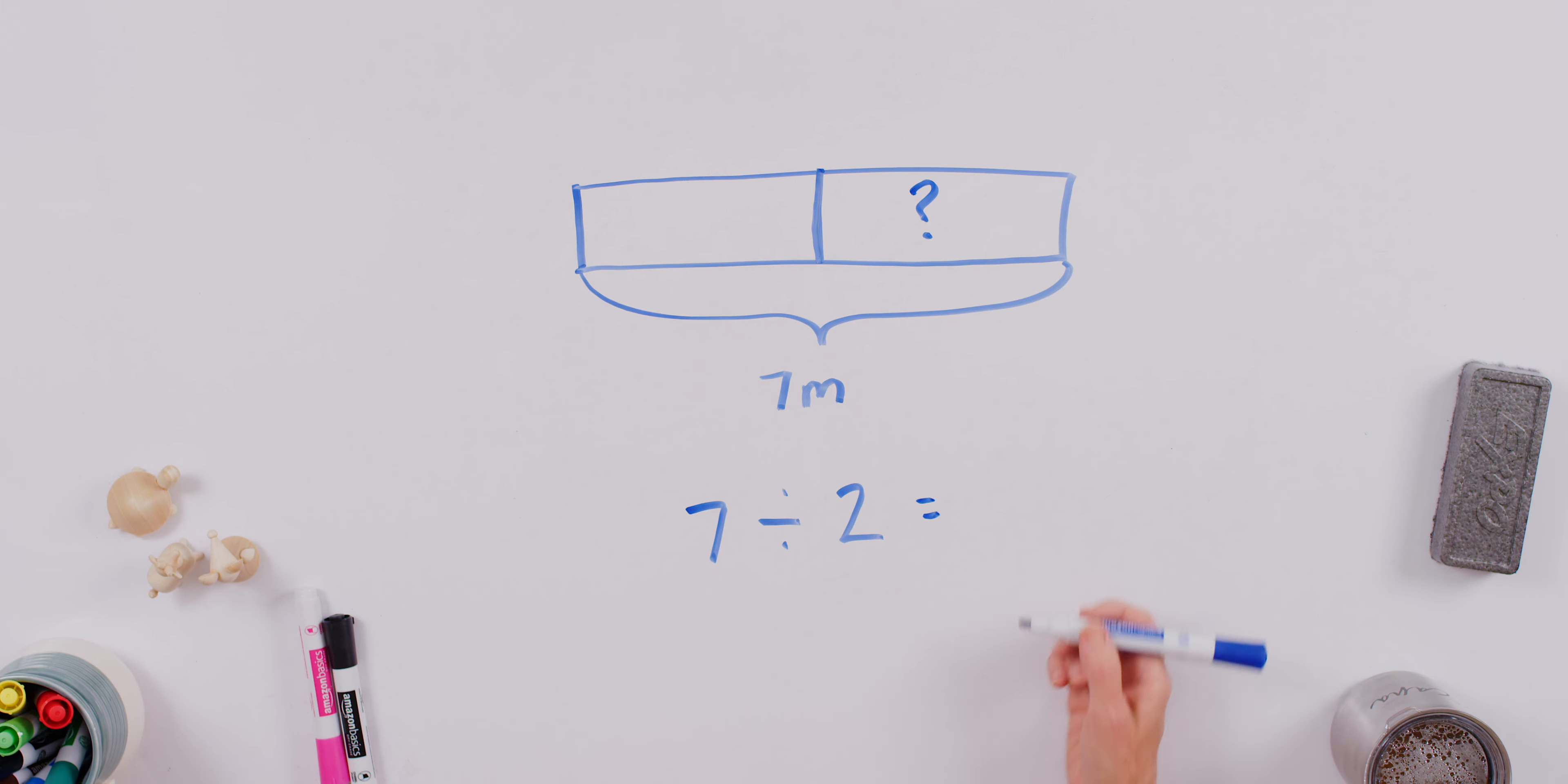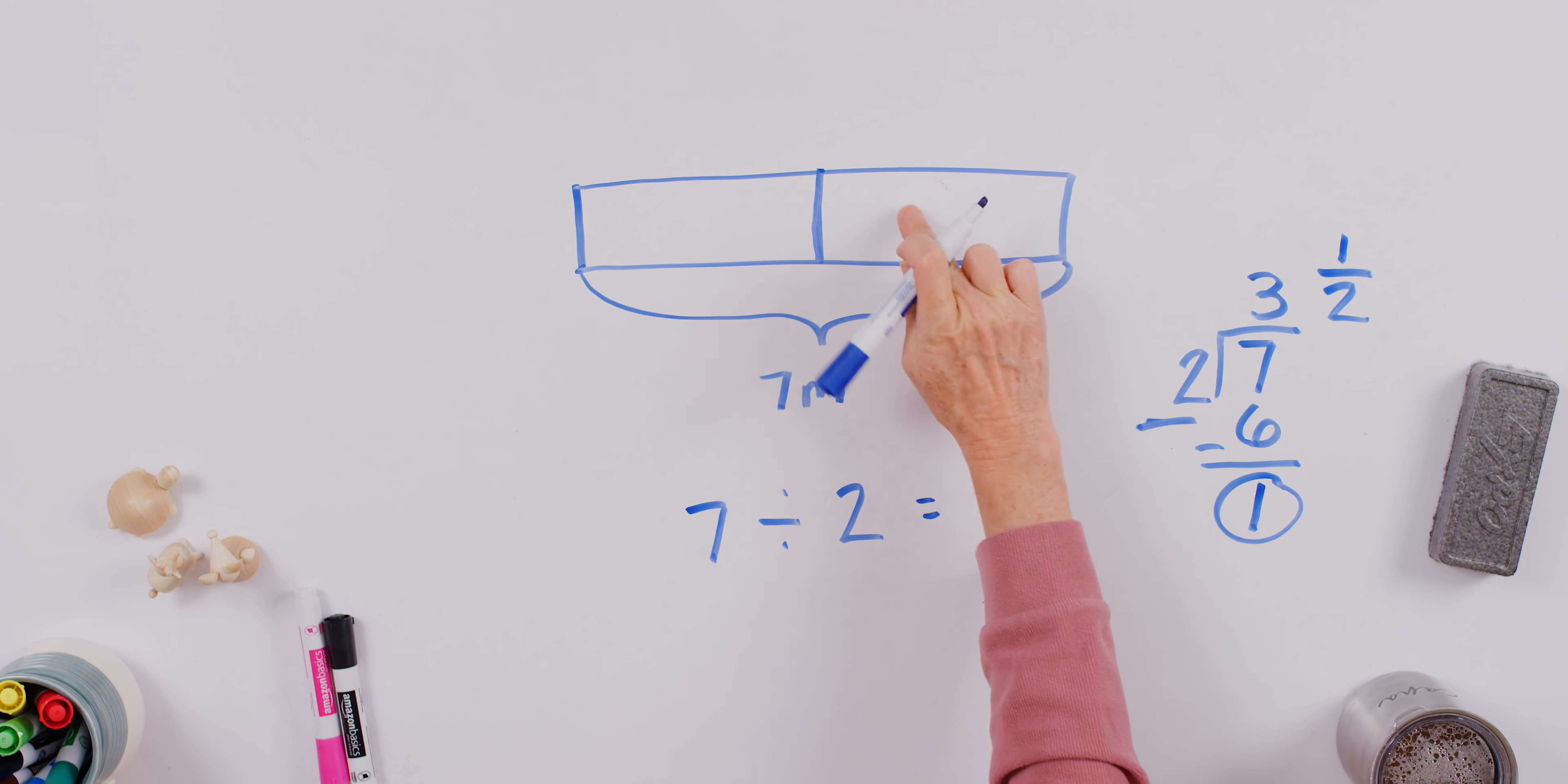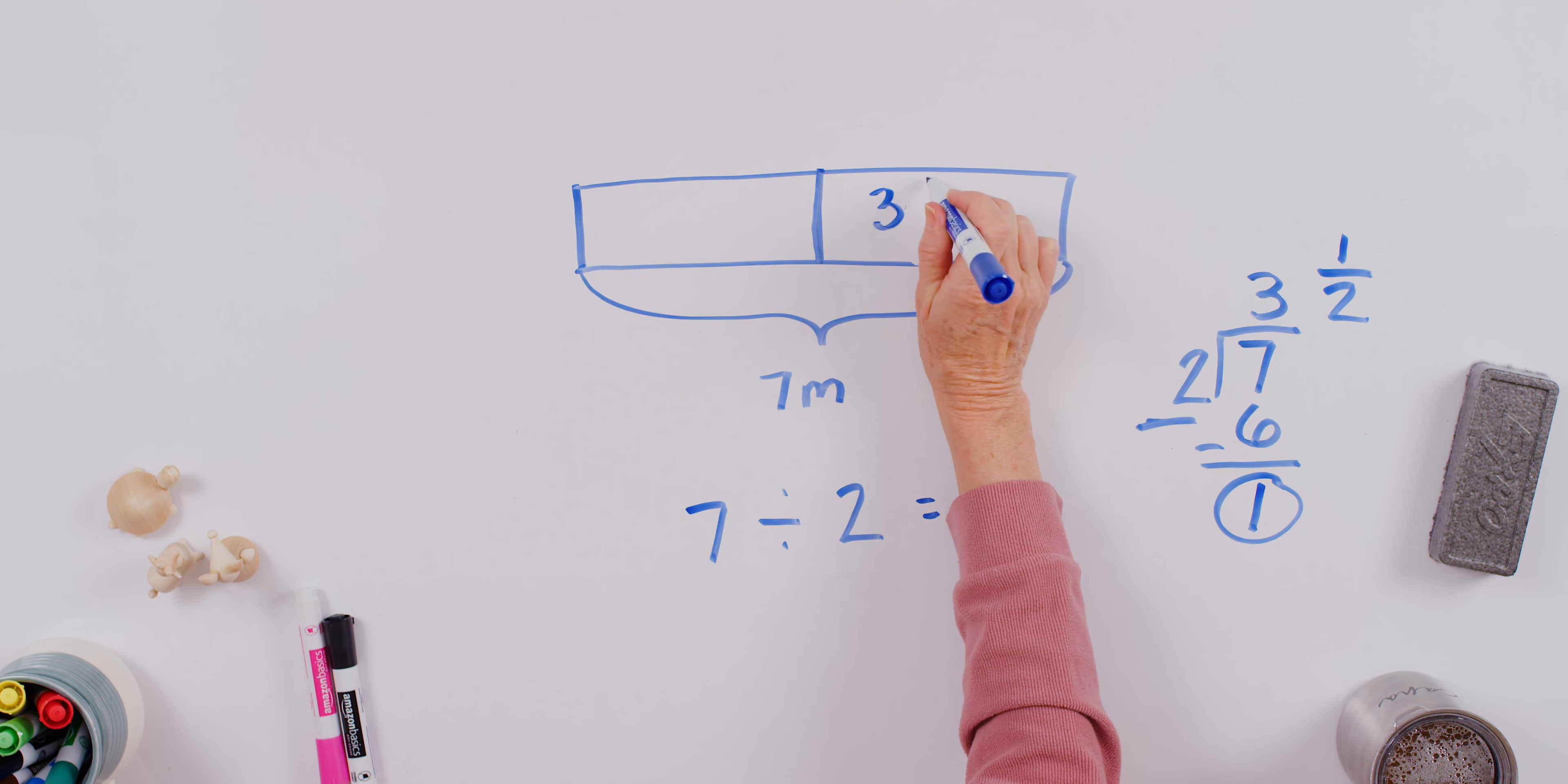Well, we've been doing it a lot of different ways, but the process I just showed you was to do this. Okay, so two times what gets me really close to seven? Two times three gets me really close to seven. Let's get six, and we're going to subtract. Seven minus six equals one. This is my remainder, and I'm going to take that remainder and make it a numerator. And this number here becomes my denominator.